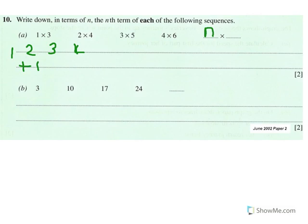The ones on the right-hand side are slightly trickier. You've got three is the first term, then four, then five, then six. So we've got a sequence that goes three, four, five, six. The first term is three, the second is four, the third is five, and the fourth is six. We need to try and find an nth term.